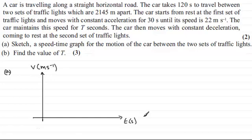For the horizontal axis, this represents the time t, and the units would be in seconds. We're told that the car takes 120 seconds to travel between the two sets of traffic lights, so let's put down here that this is 120 seconds, and we'll have zero seconds there.